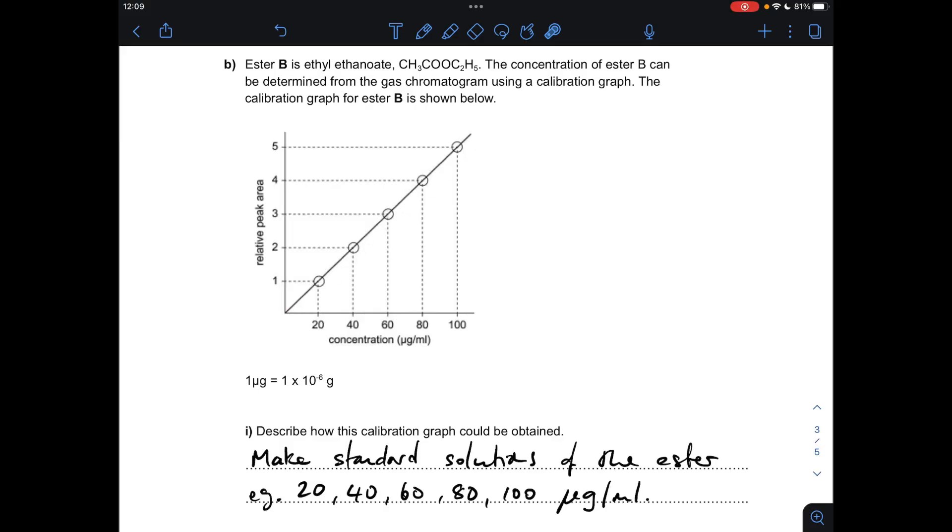There's direct proportionality between concentration and peak area anyway, so that's why it's going one, two, three, four, five. Then all you do is plot your relative peak area against the concentration and you'd get that.